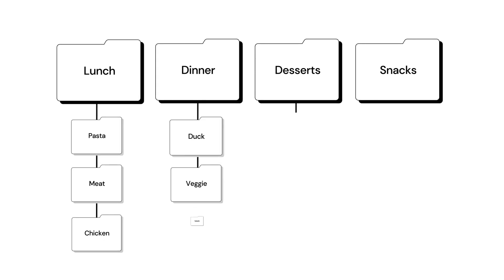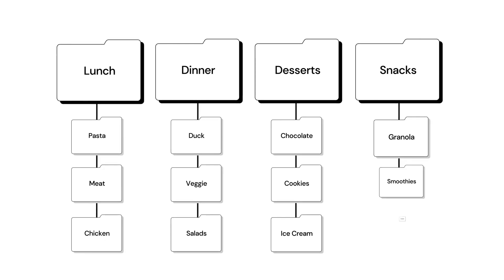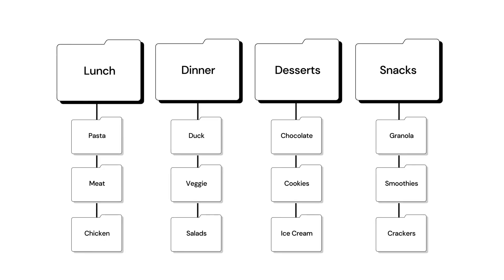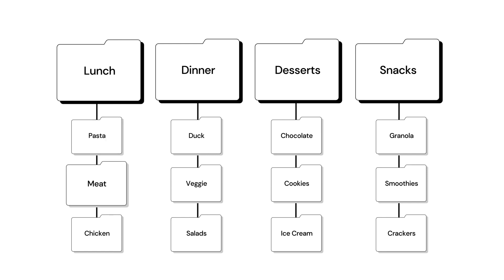For example, if you have a blog about food, you can create a category for every type of meal, with subcategories for types of food like pasta, meat, and chicken. And we can add any category to our menu to facilitate easy navigation for our visitors.